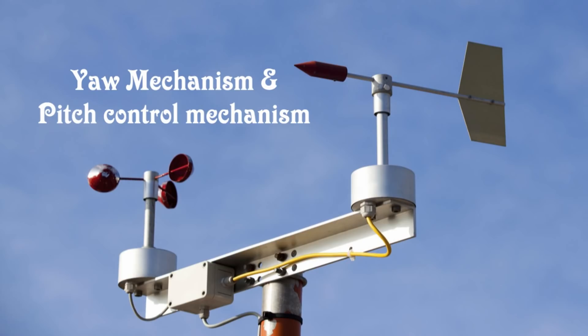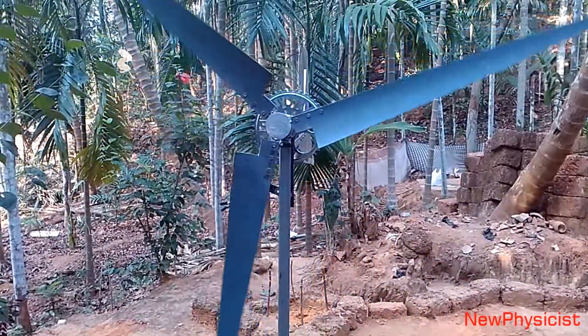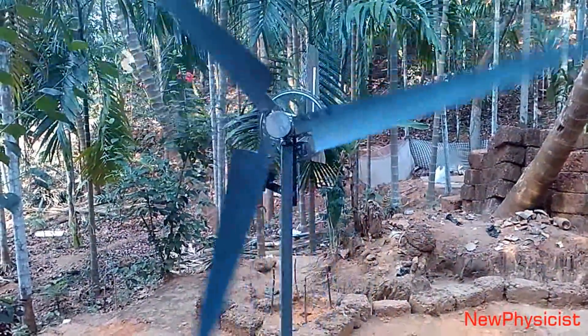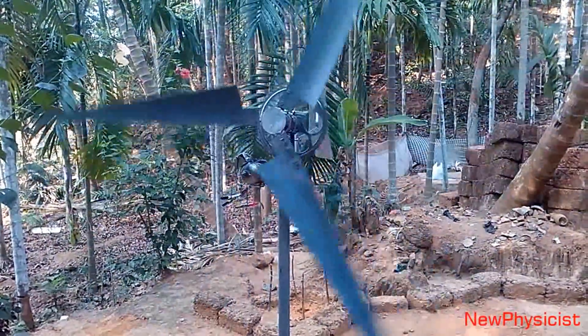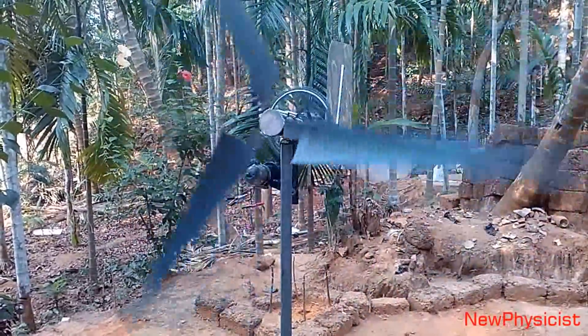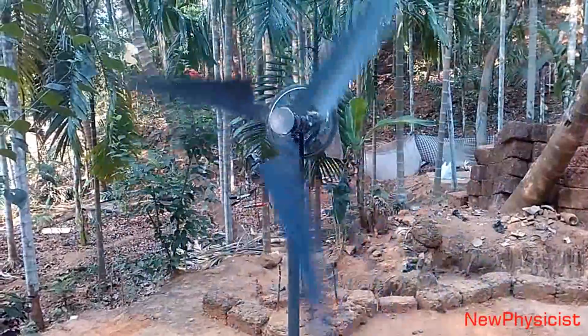Yaw mechanism and pitch control mechanism. You may have noticed a big and long tail behind horizontal axis wind turbines. The propeller should face the wind to get the maximum efficiency all the time. So when wind direction changes, this tail will adjust the propeller to face the wind. This method is known as mechanical yawing.